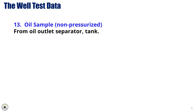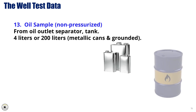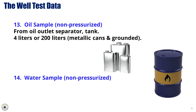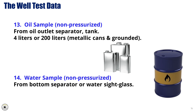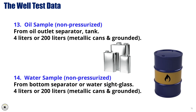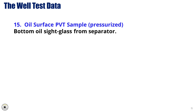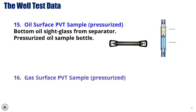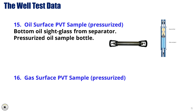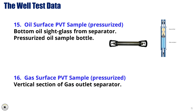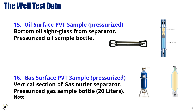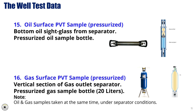13. Non-Pressurized Oil Sample — oil samples are taken from the oil outlet separator or tank, typically in volumes of 4 liters or 200 liters, collected in metallic cans grounded to avoid static buildup. 14. Non-Pressurized Water Sample — similarly taken from the bottom separator or water sight glass in 4-liter or 200-liter metallic cans. 15. Pressurized Oil Surface PVT Sample — taken from the bottom oil sight glass of the separator in a pressurized oil sample bottle. 16. Pressurized Gas Surface PVT Sample — taken from the vertical section of the gas outlet separator in a 20-liter pressurized gas sample bottle. Both oil and gas samples should be taken simultaneously under separator conditions to maintain consistency.